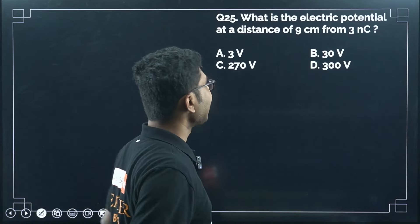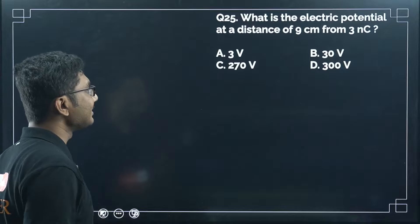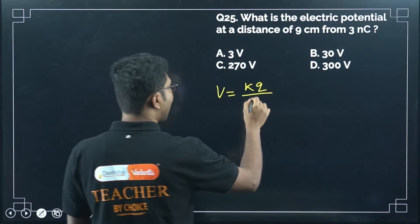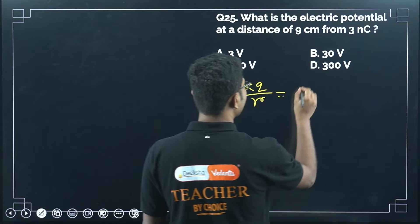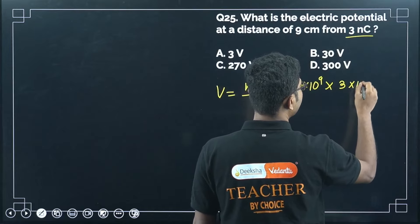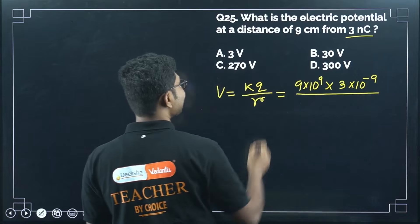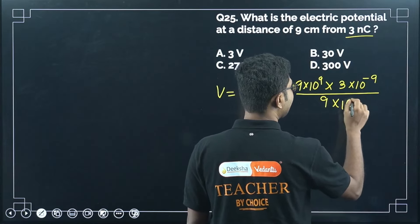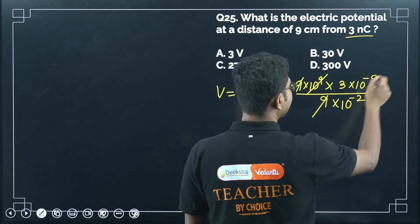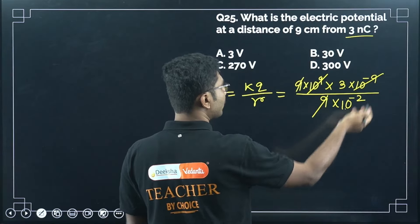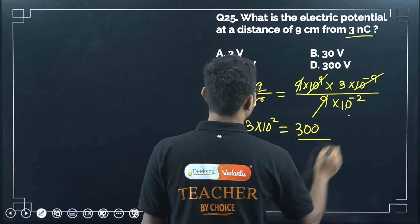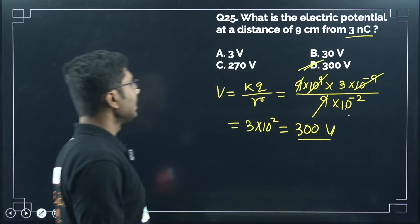Question 25: find the electric potential at a distance of 9 cm from a 3 nano coulomb charge. V = KQ/R = (9×10⁹ × 3×10⁻⁹) / (9×10⁻²). The 9s and 10⁹ with 10⁻⁹ cancel, leaving 3 / 10⁻² = 3×10² = 300 volts.